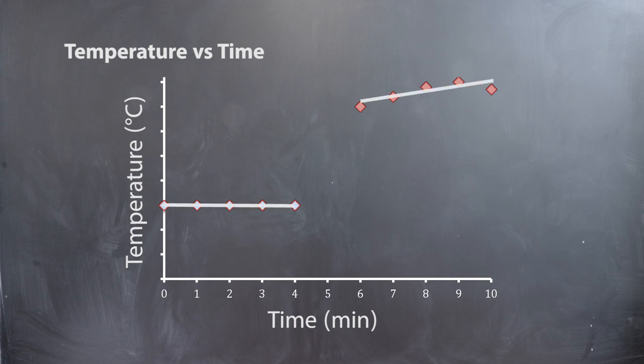Add two lines of best fit, one for the data points from 0 to 4 minutes and the other for the points from 6 to 10 minutes.